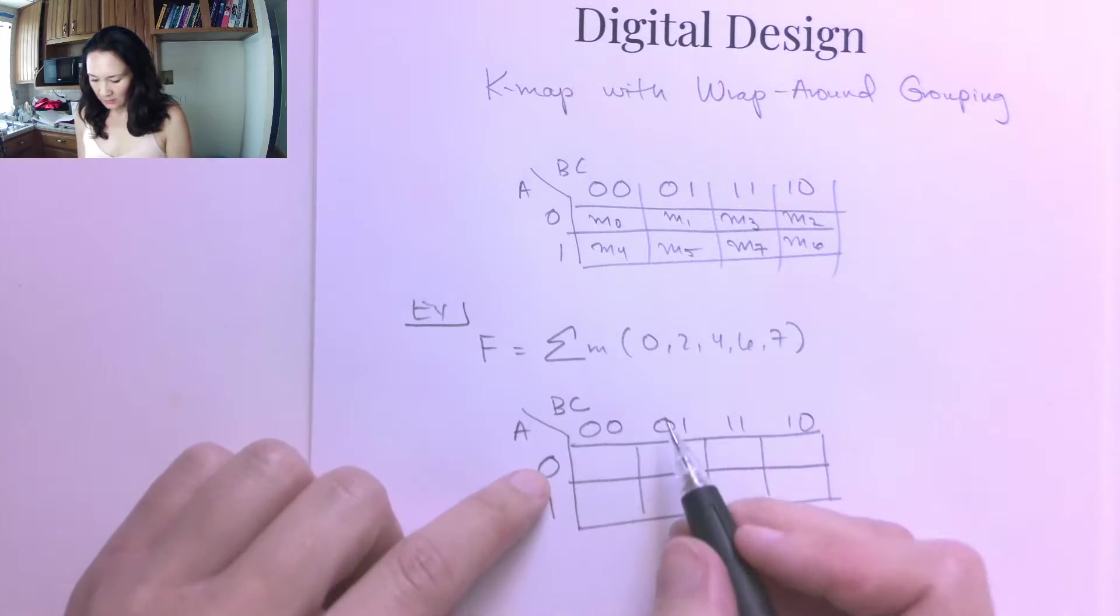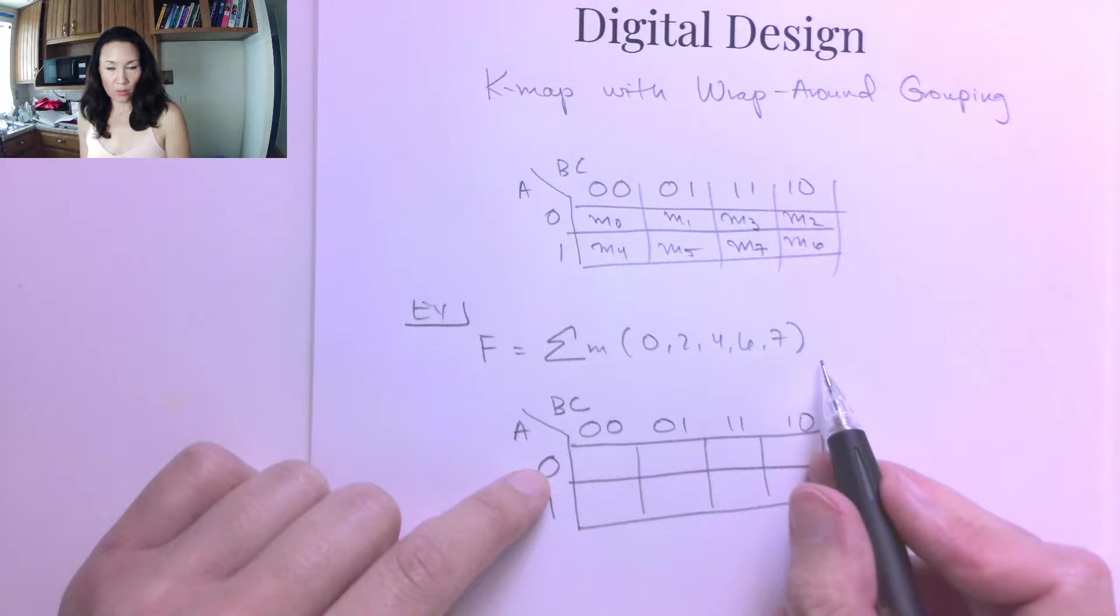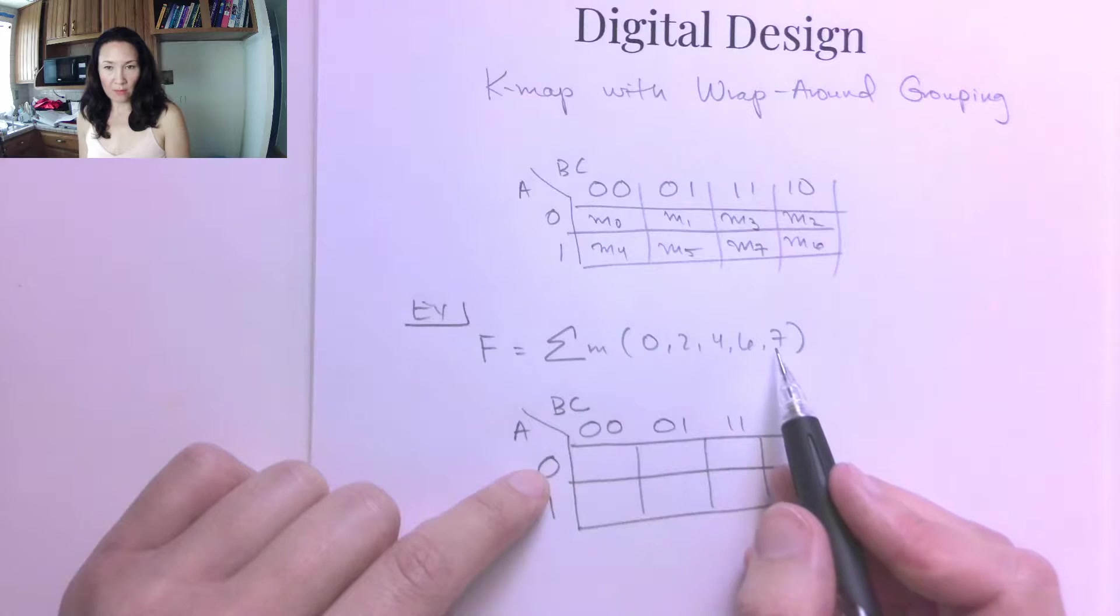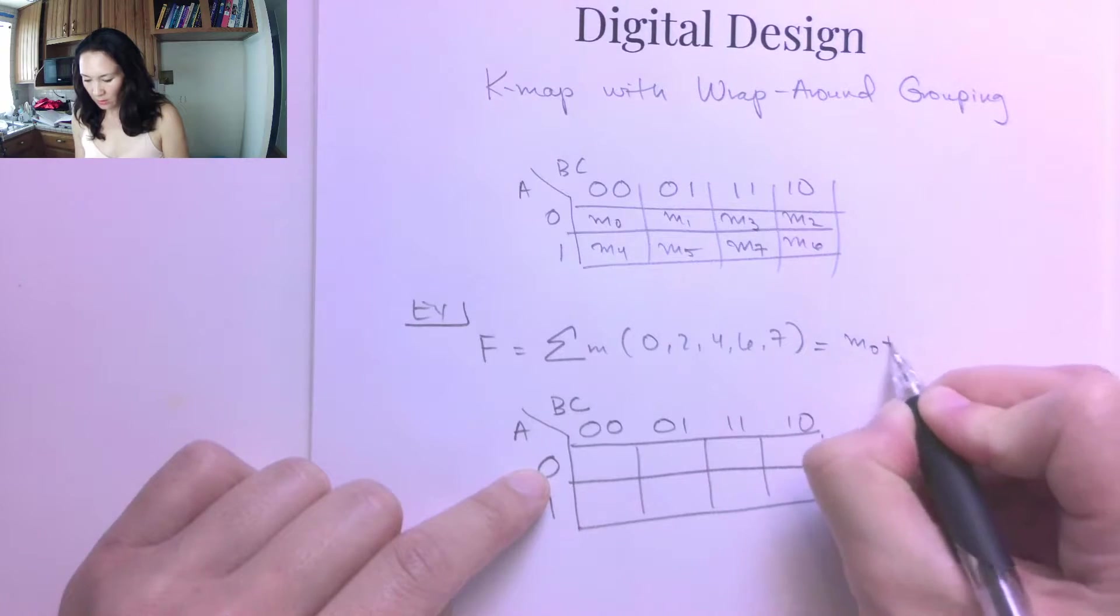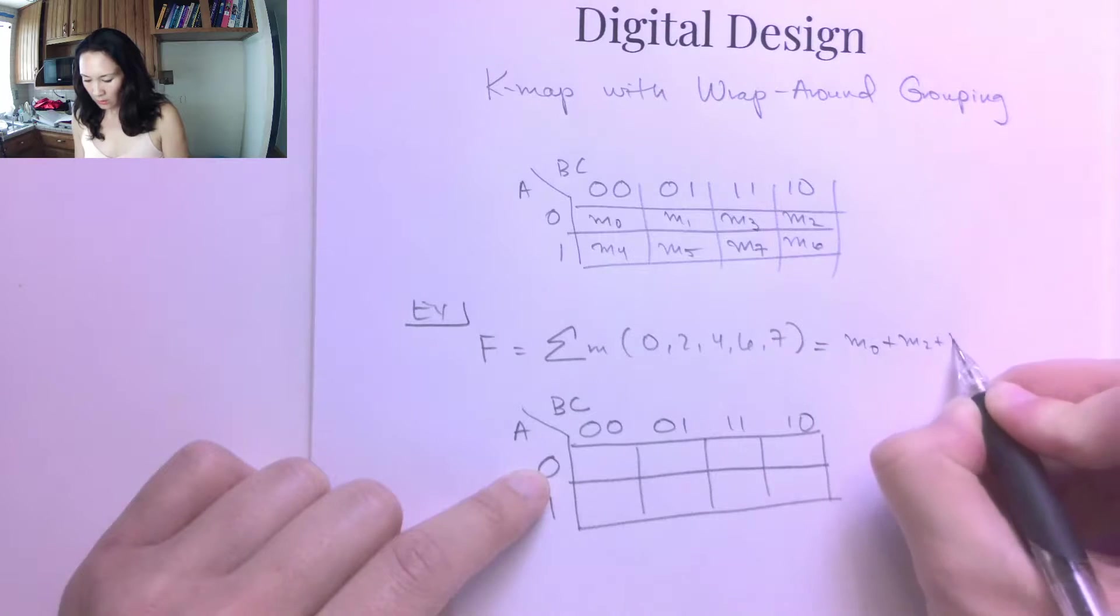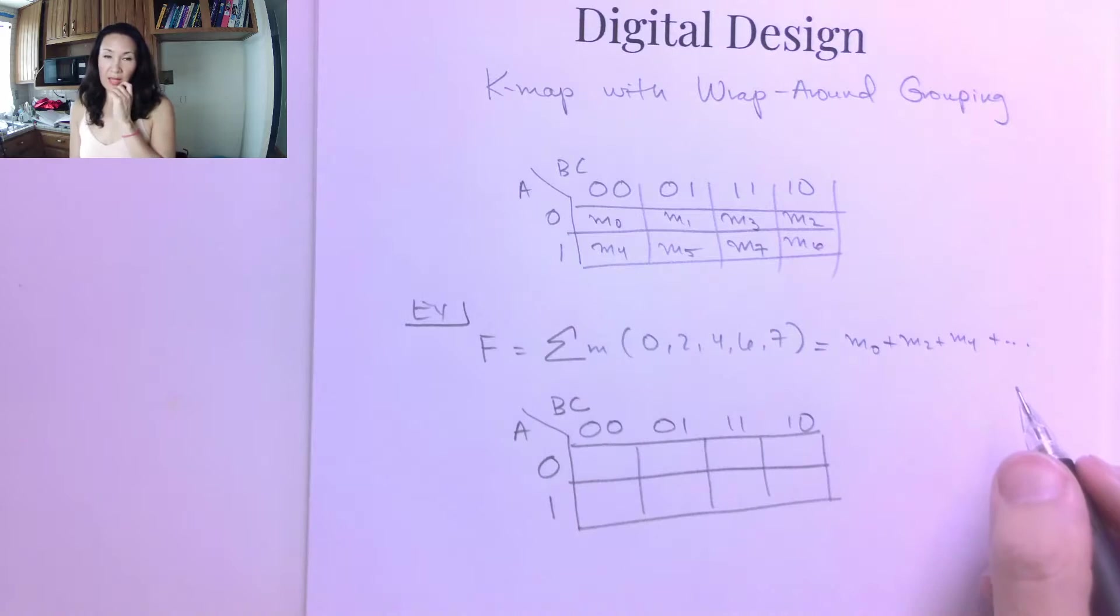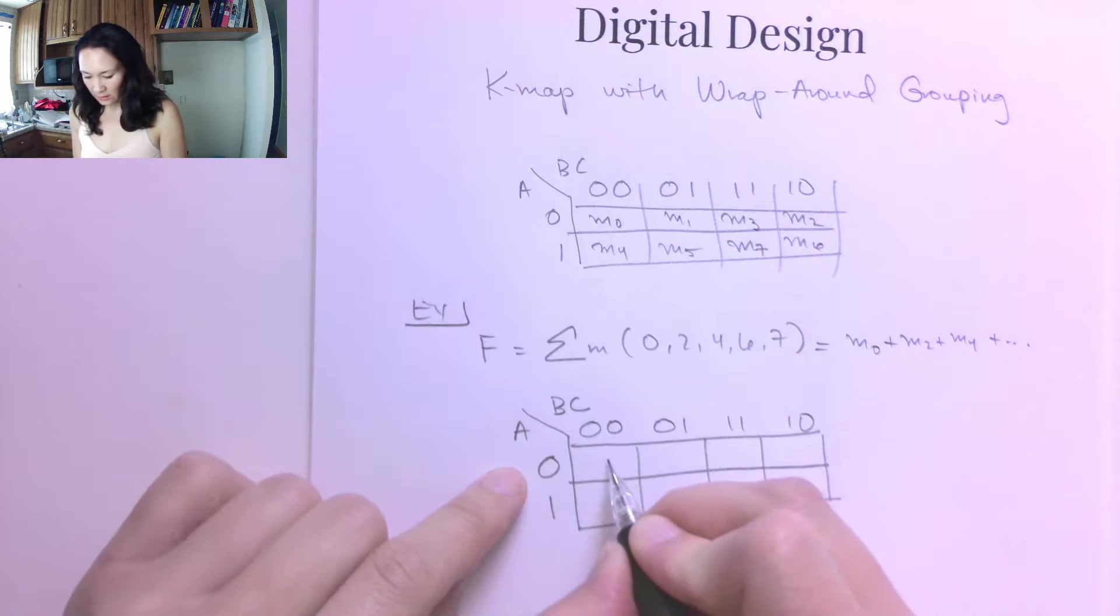Minterm 0 I know is going to have a 1 because of this minterm notation here. So everywhere I have this numeral, that means that in my function at minterm 0, minterm 2, or minterm 4, I know that my function's going to have an output of 1. So I get to put a 1 wherever one of these numbers is.